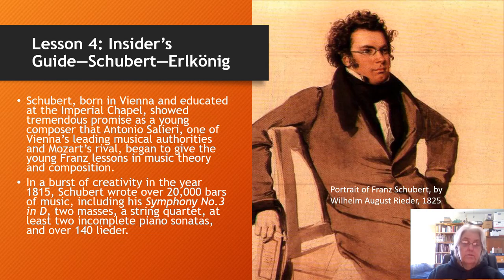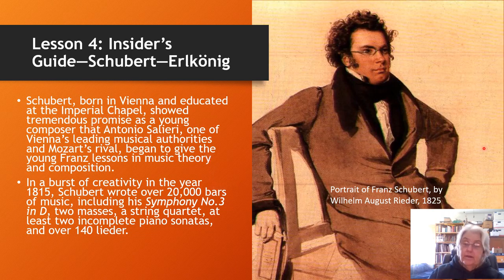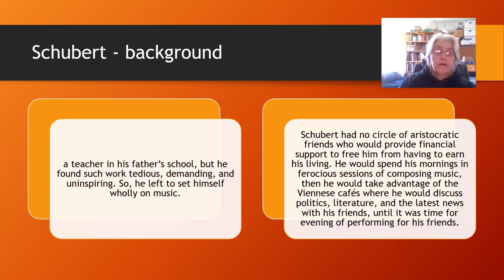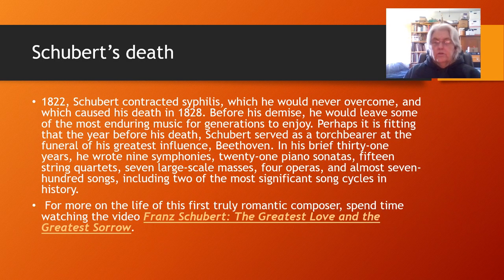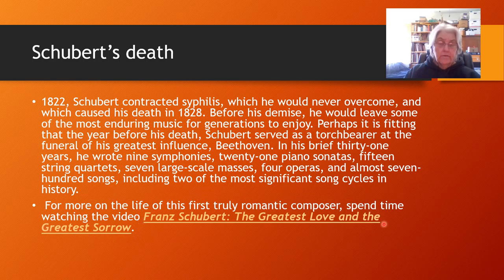Franz Schubert was particularly known for his songwriting, though he did write symphonies and quartets as well. He was born in Vienna and received music lessons from Antonio Salieri, who was one of Mozart's rivals. He first worked as a teacher in his father's school but didn't like doing that, and was able to get support from his aristocratic friends so he could spend his time composing and performing. Schubert contracted syphilis in 1822 and ended up dying in 1828, but he left wonderful music. If you want to spend more time learning about him, click on this link for a full-length video about his life.